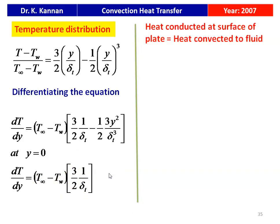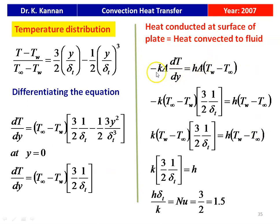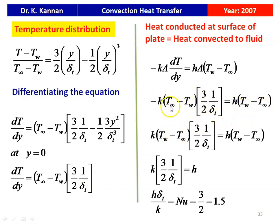For convection heat transfer, heat conducted at the surface equals heat convected to the fluid: −k(dT/dy) = h(T_w − T∞). Substituting dT/dy at y = 0: −k × (T∞ − T_w) × (3/2)(1/δ_t) = h(T_w − T∞). Dropping the negative sign and cancelling (T_w − T∞): k × (3/2)(1/δ_t) = h. Rearranging: Nu = h·δ_t / k = 3/2 = 1.5. This is the answer.